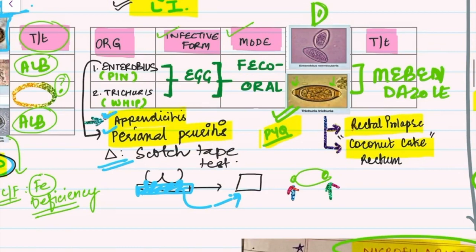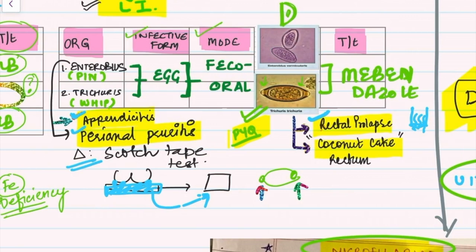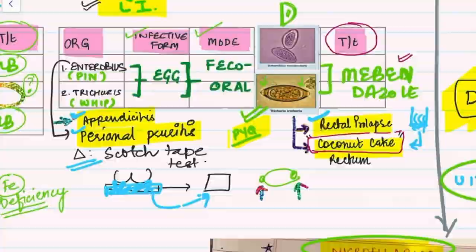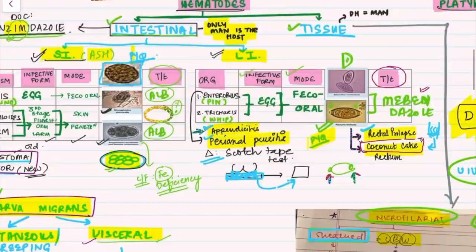Trichuris is implicated in rectal prolapse in children. When many worms are attached to the rectal walls, the endoscopic image is known as 'coconut cake rectum' — a frequently asked question. Treatment: mebendazole is the drug of choice for both Enterobius and Trichuris, making it the more specific answer than albendazole for these large intestinal nematodes.